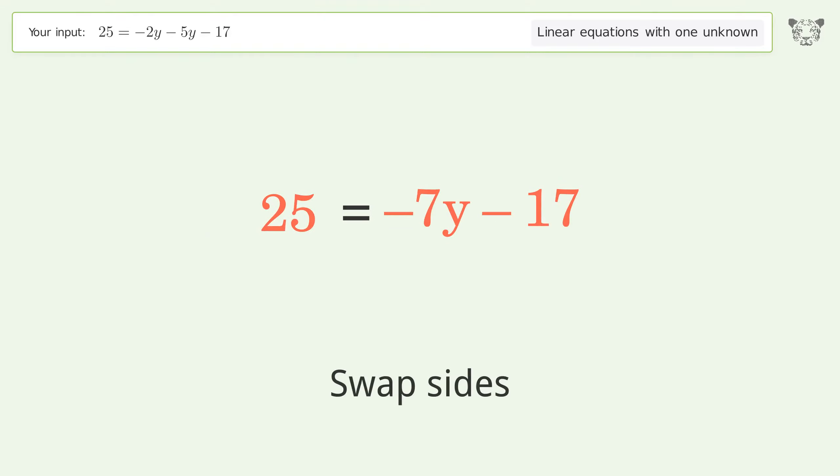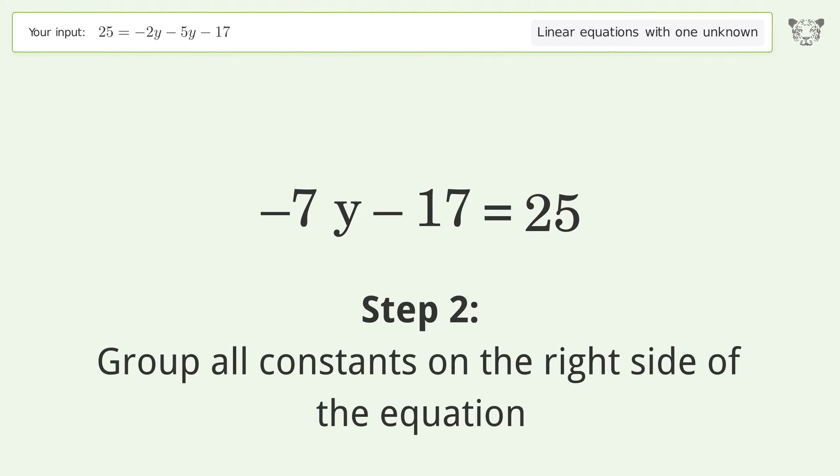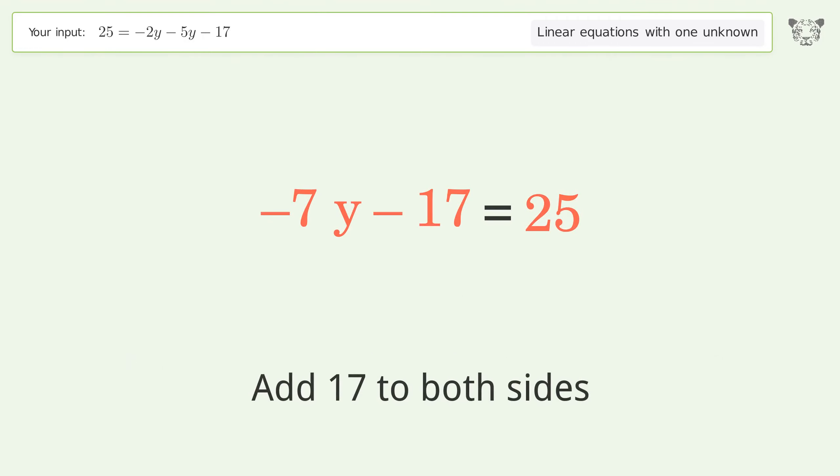Swap sides. Group all constants on the right side of the equation. Add 17 to both sides.